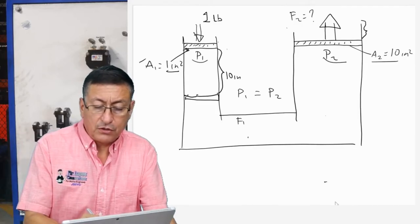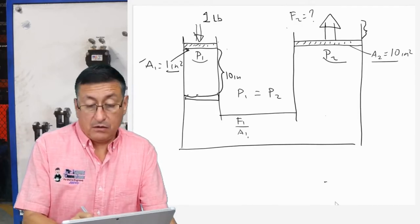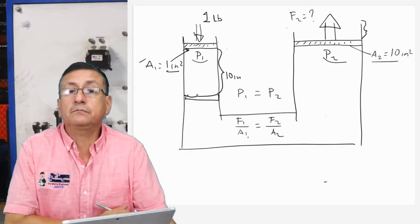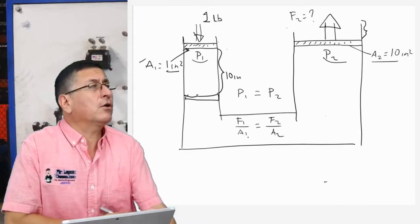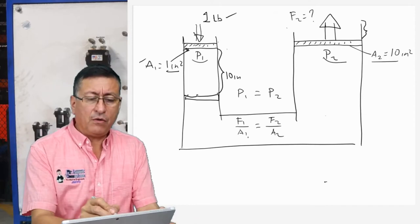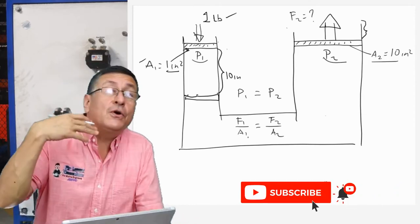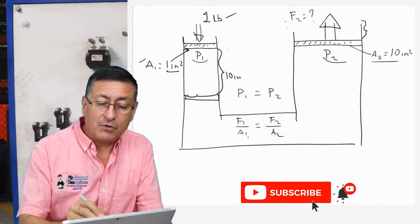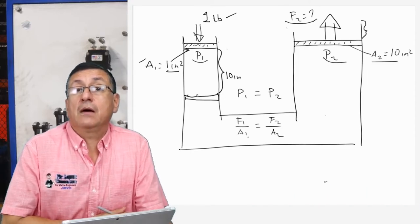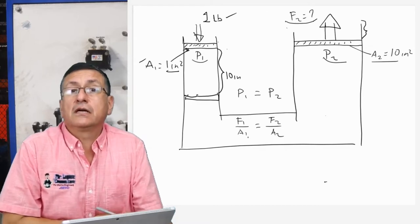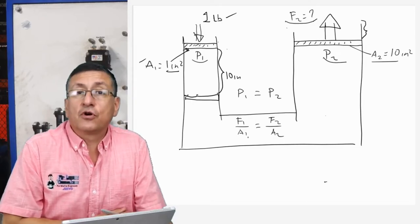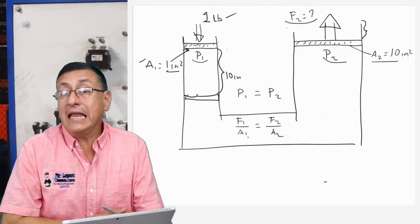Pressure is equal to the force divided by the area. This is in position number one. And in position number two it should be equal to the force divided by area number two. Suppose that we are going to apply in piston number one a small force — one pound of force. And we are going to calculate how much is the force at the second point, with an area of one square inch producing output force in the second cylinder with an area of ten square inches.